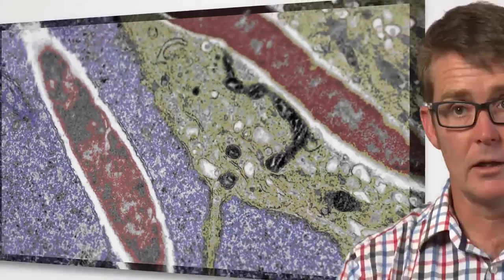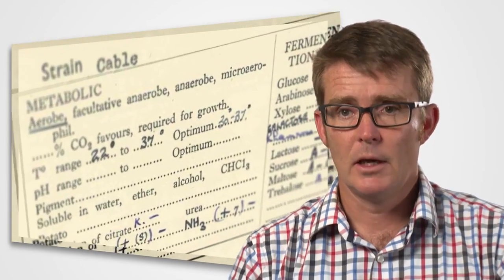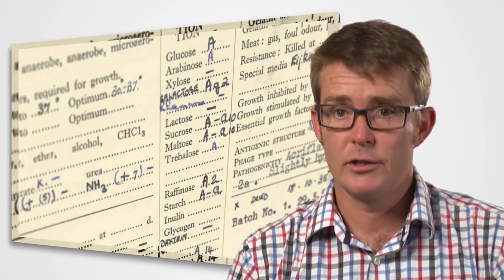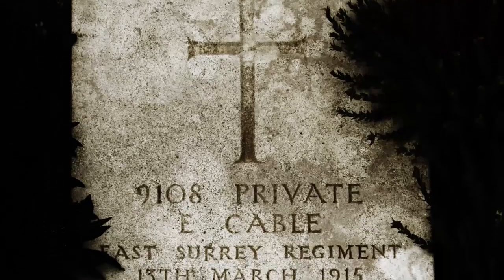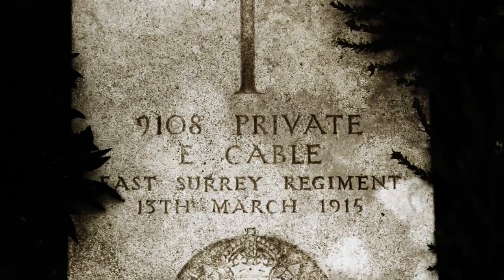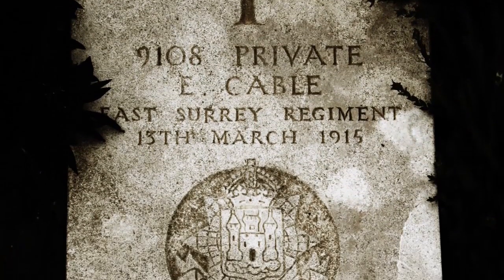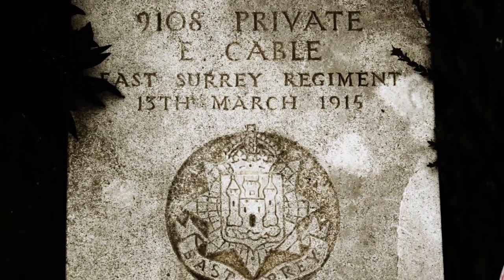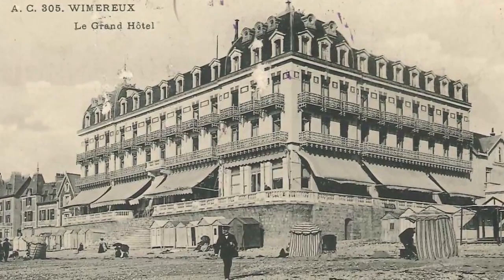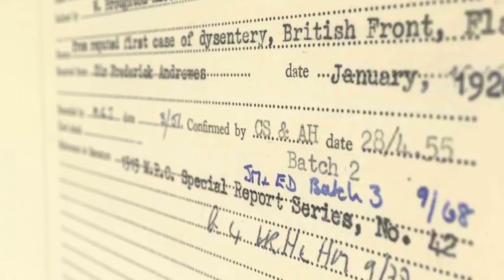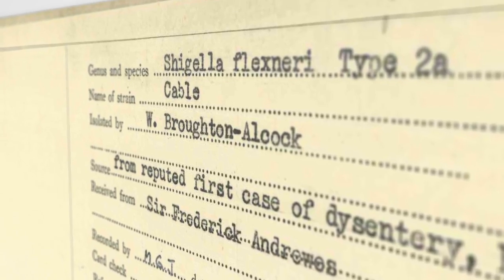The earliest live strain of Shigella that we have is called NCTC1, the Cable strain. We now know from looking at military and historical records that this came from a private who died in March 1915 on the British Western Front. Private Ernest Cable was treated at the 14th Stationary Hospital in Wimmera in France. NCTC1 was collected by a man called Broughton Alcock.